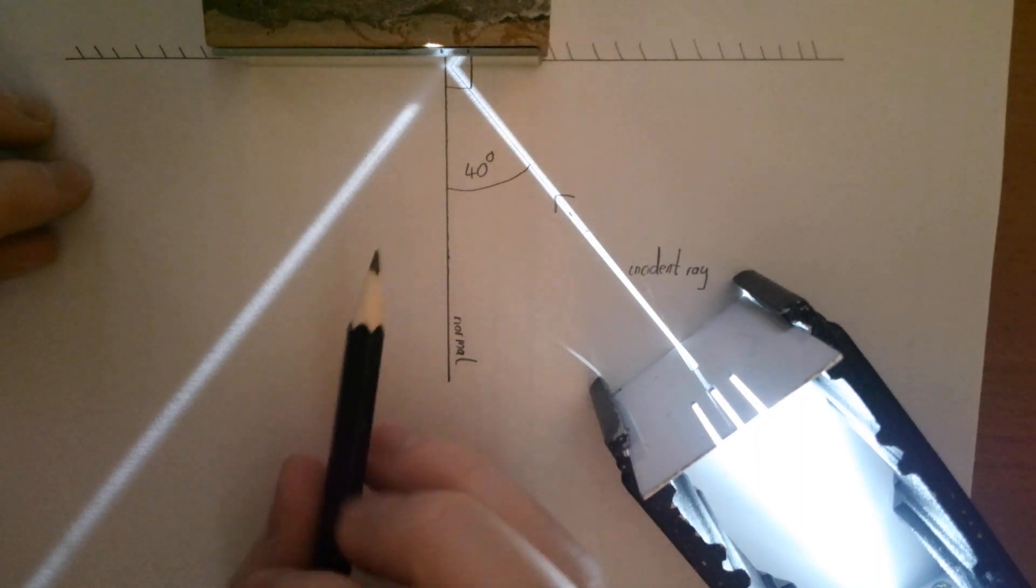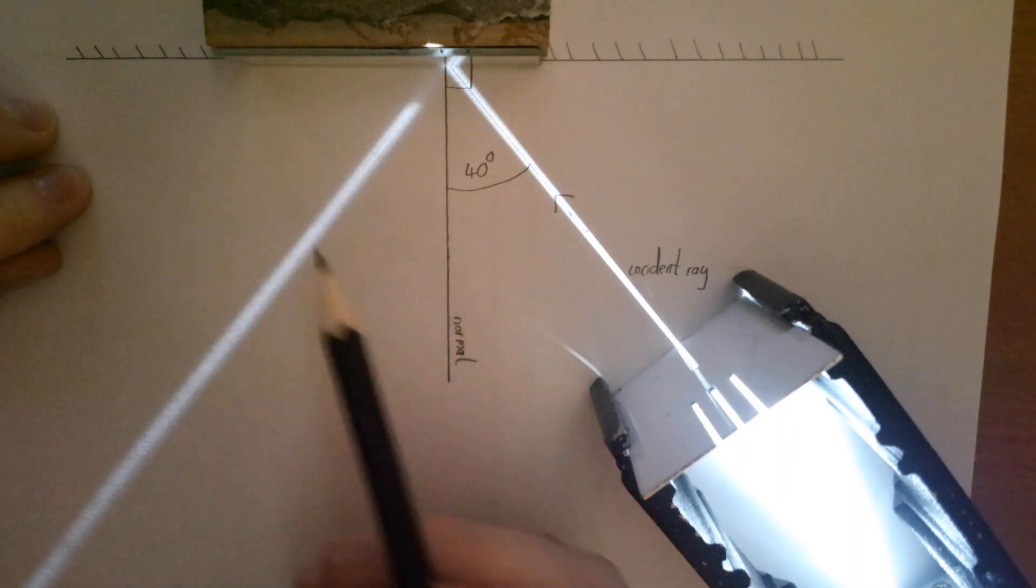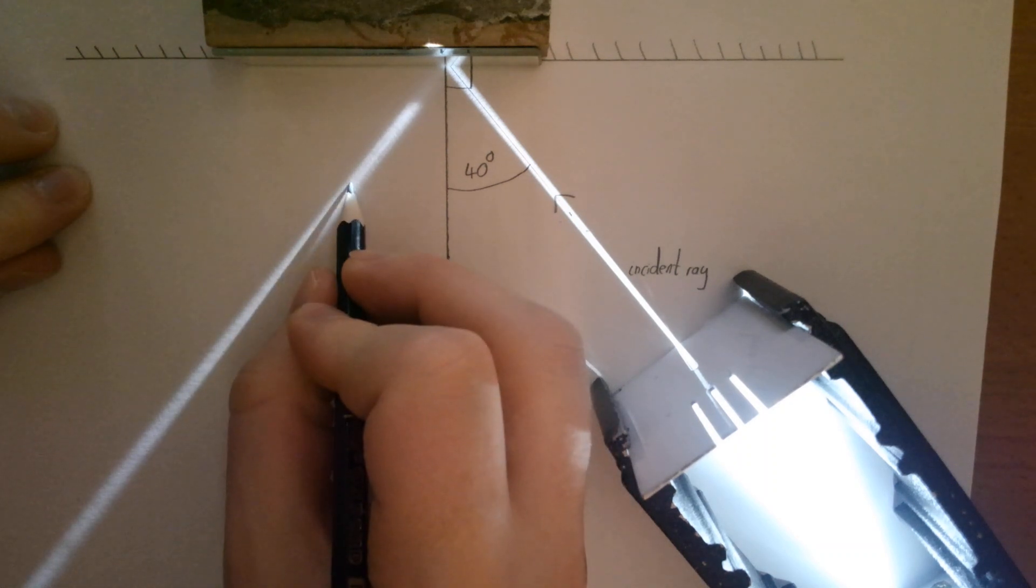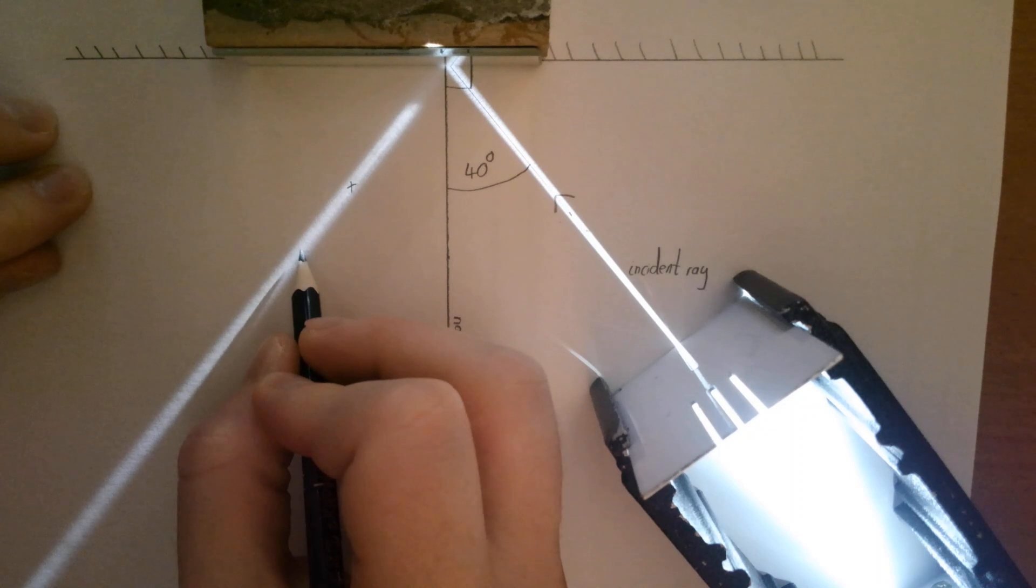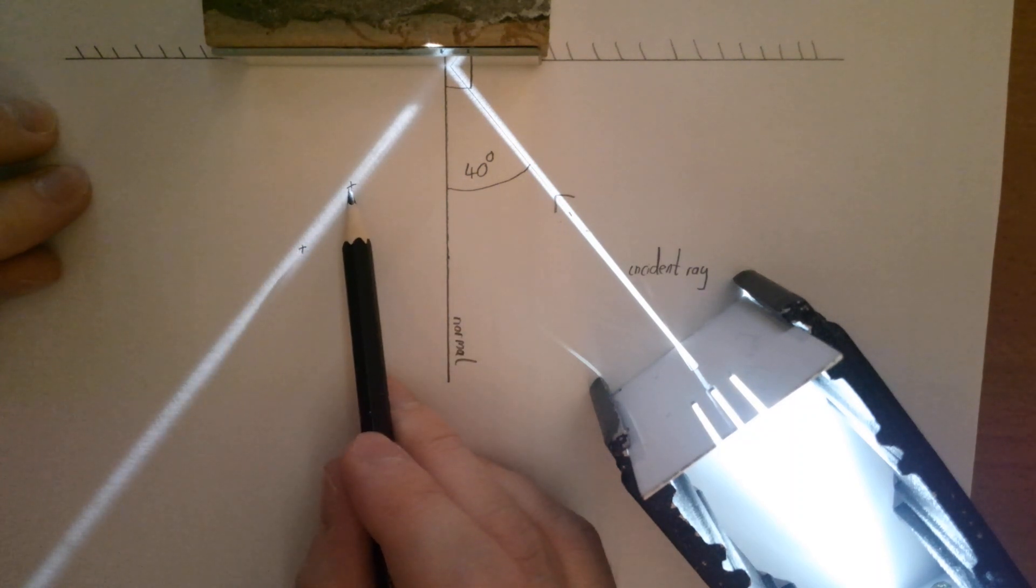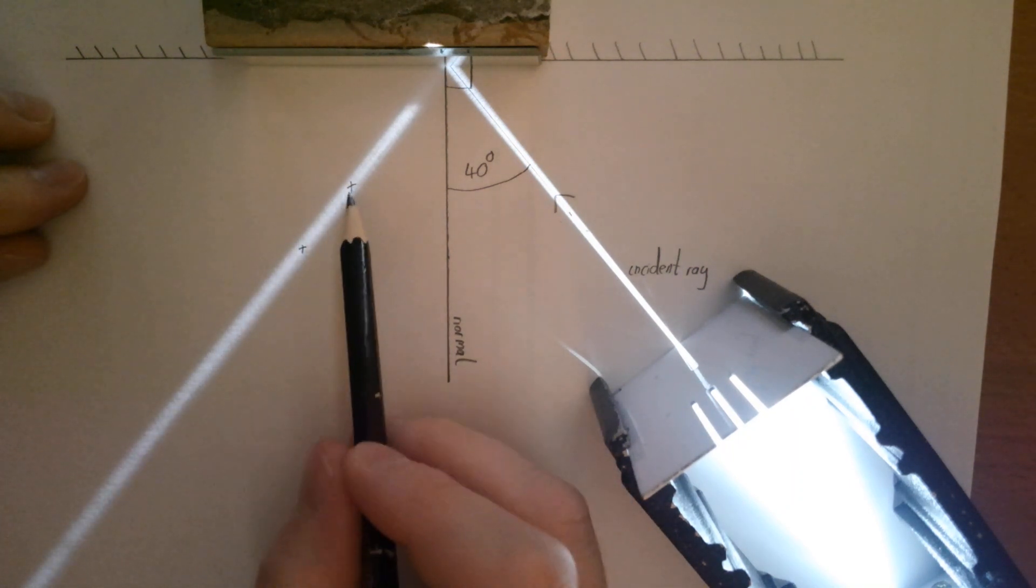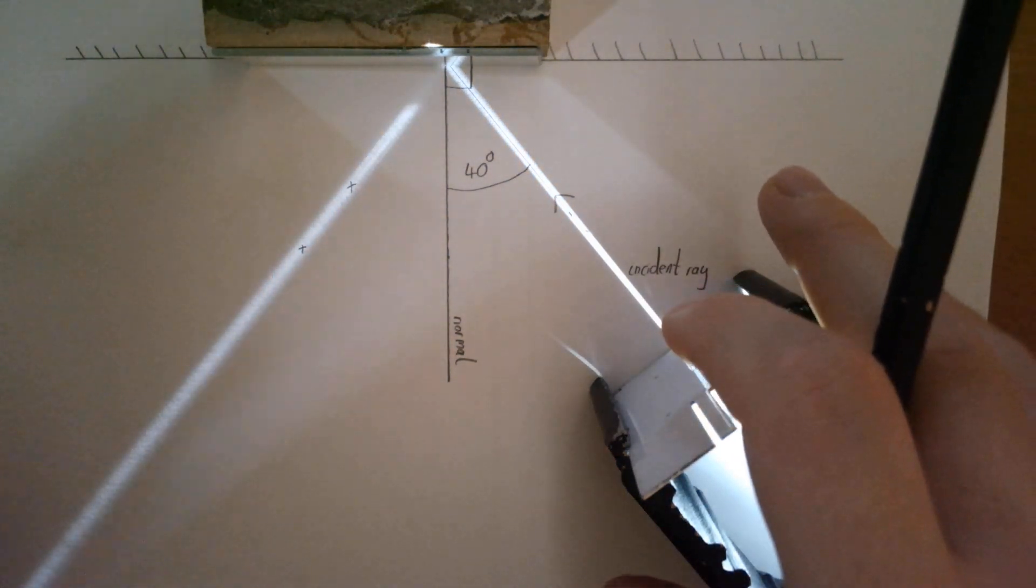The way I'm going to mark this reflected ray is I'm going to use my sharp pencil and mark crosses just in the middle of the light ray there. Crosses are much more accurate than doing dots or dashes. Small crosses where the centre of the cross is right in the middle of the light ray.